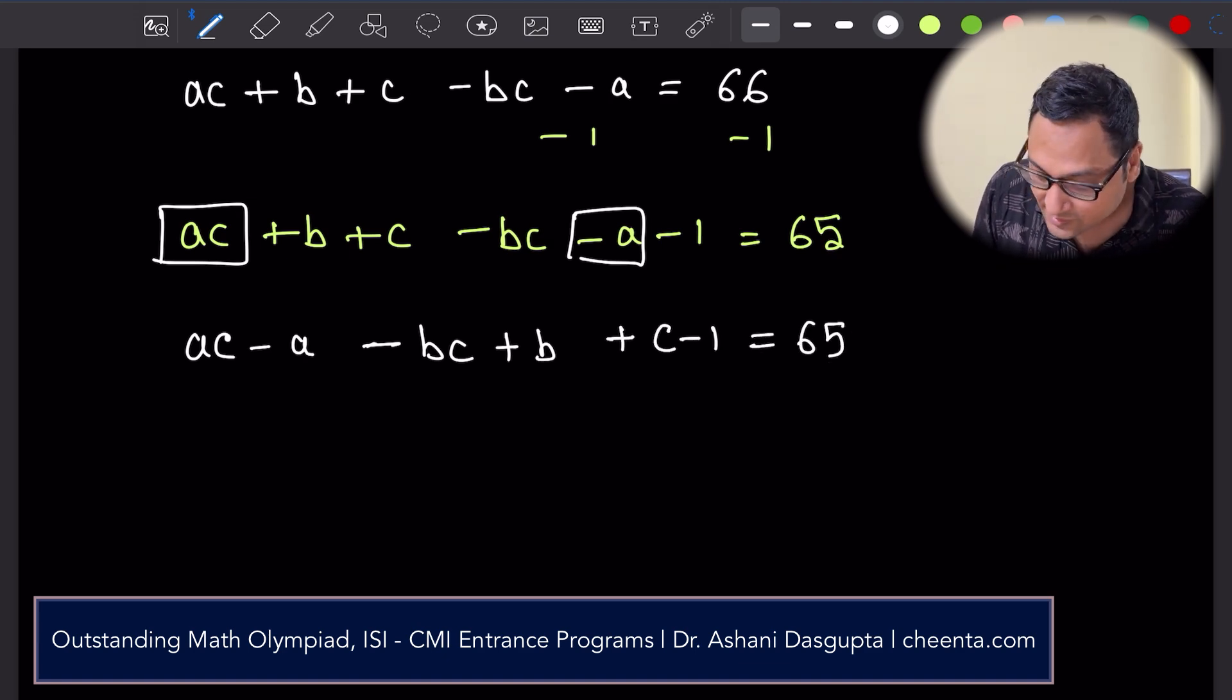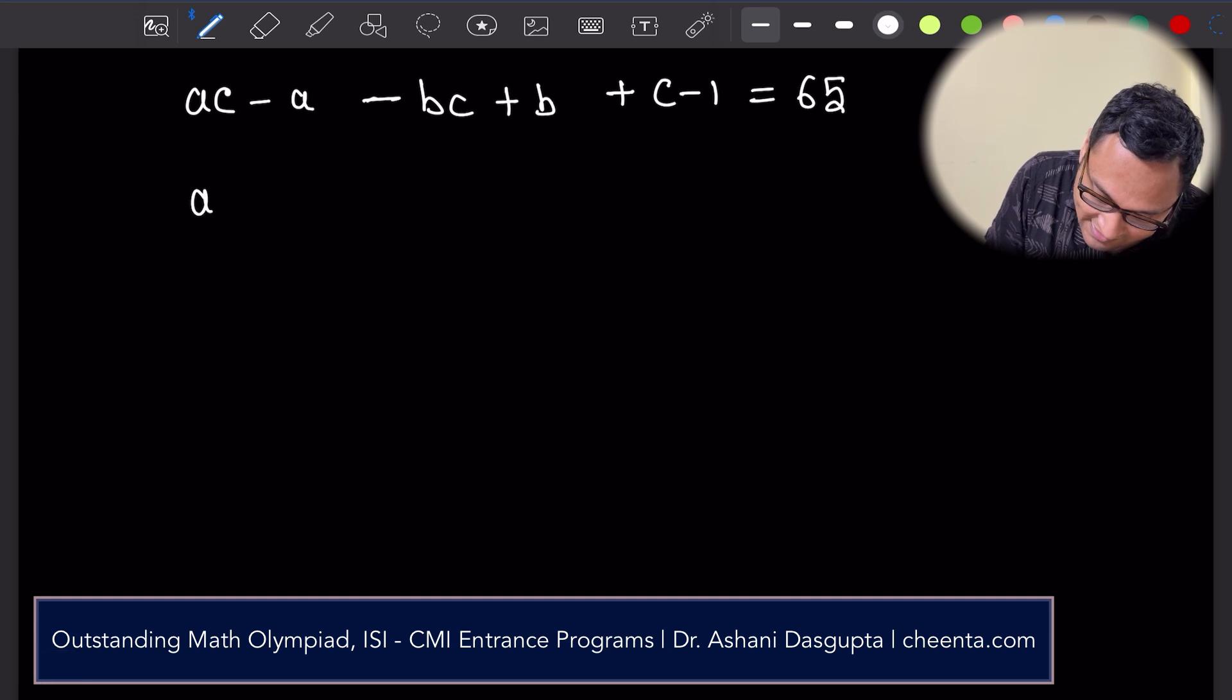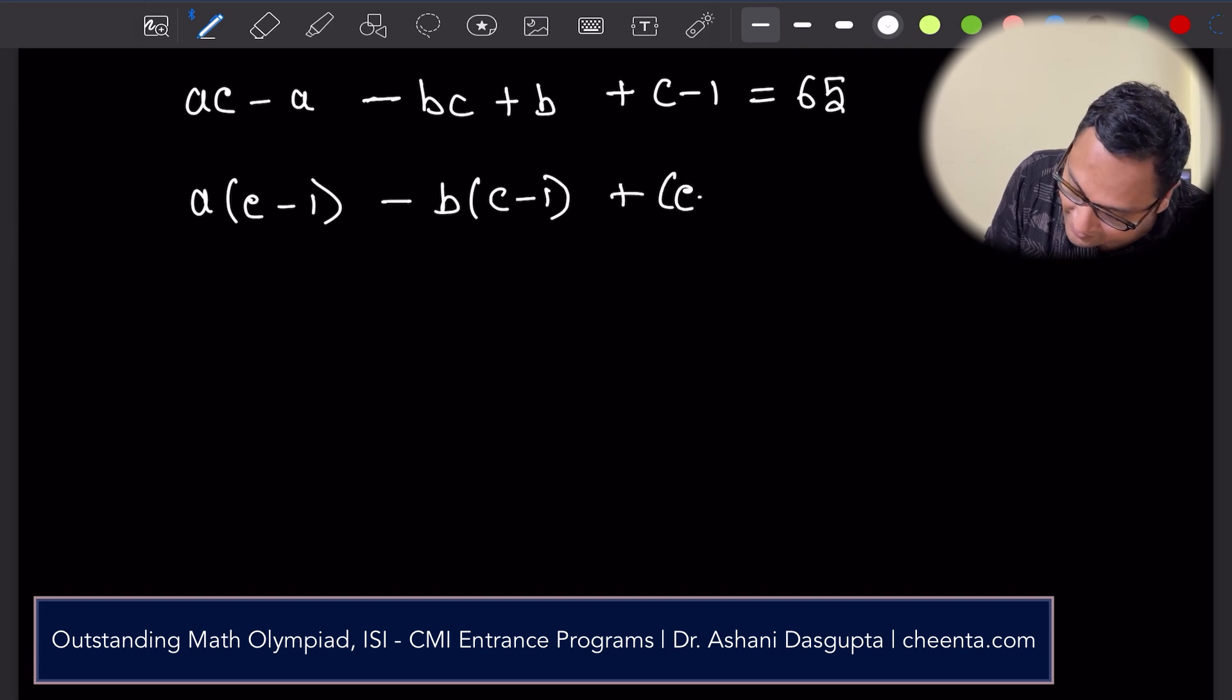We are almost done, we will be factorizing it, so a times (c - 1) minus b times (c - 1) plus (c - 1) equals 65.